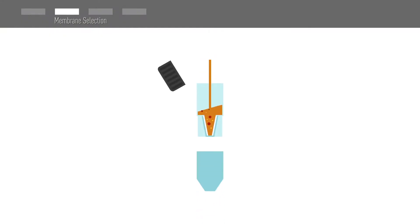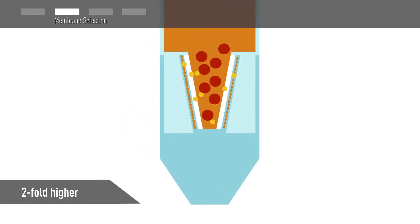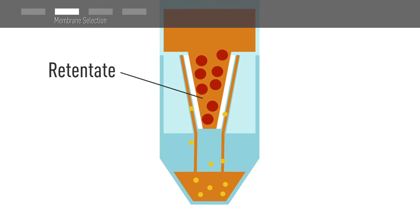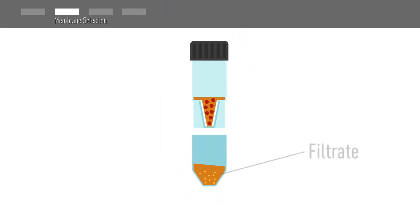Membrane selection will depend on the size of your protein. PES membrane will retain proteins and other molecules with a molecular weight that is at least two-fold higher than the molecular weight cutoff. The concentrated sample is referred to as the retentate. The molecules and contaminants in solution that are small enough to pass through the pores of the membrane are collected in the filtrate.